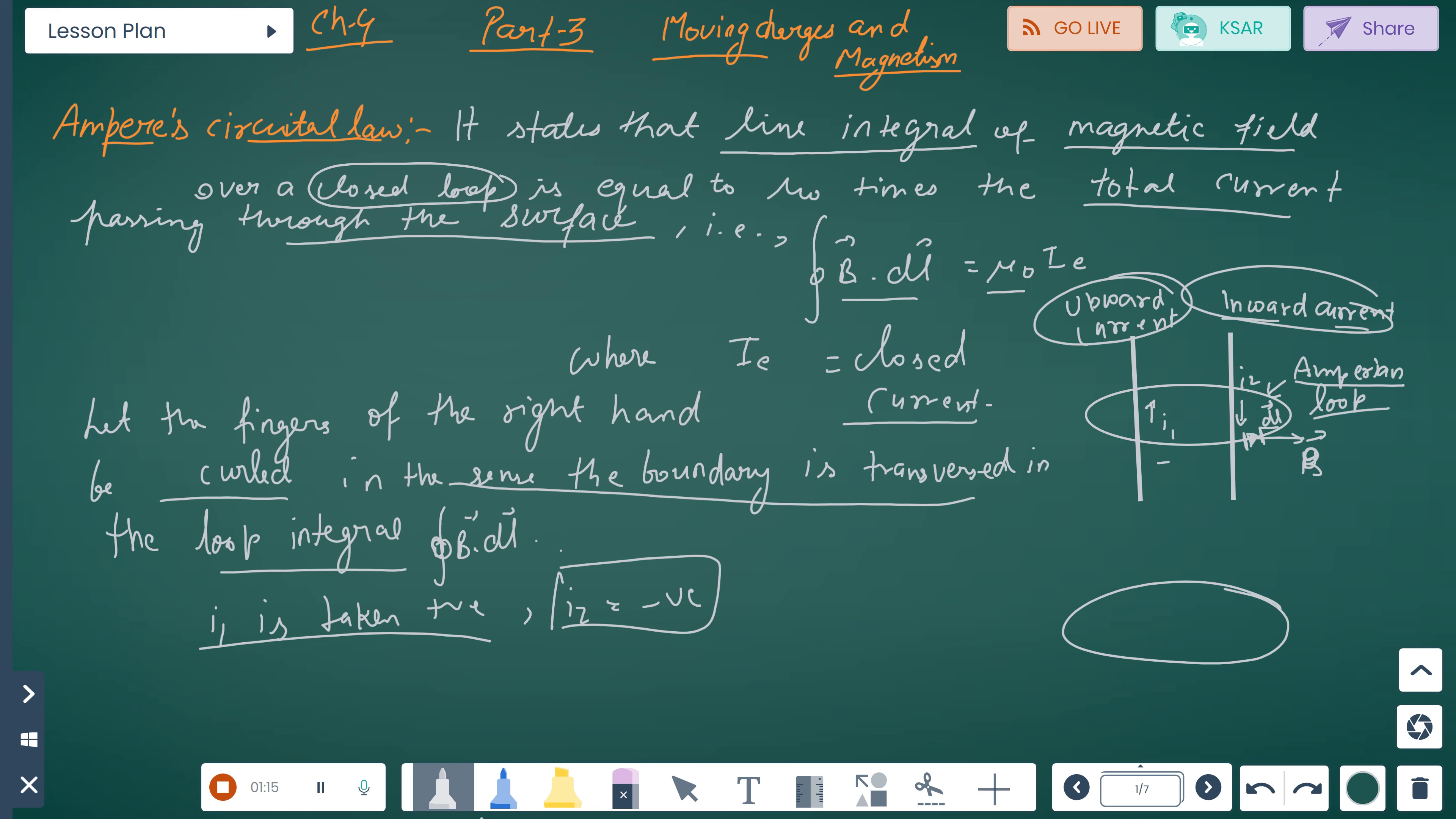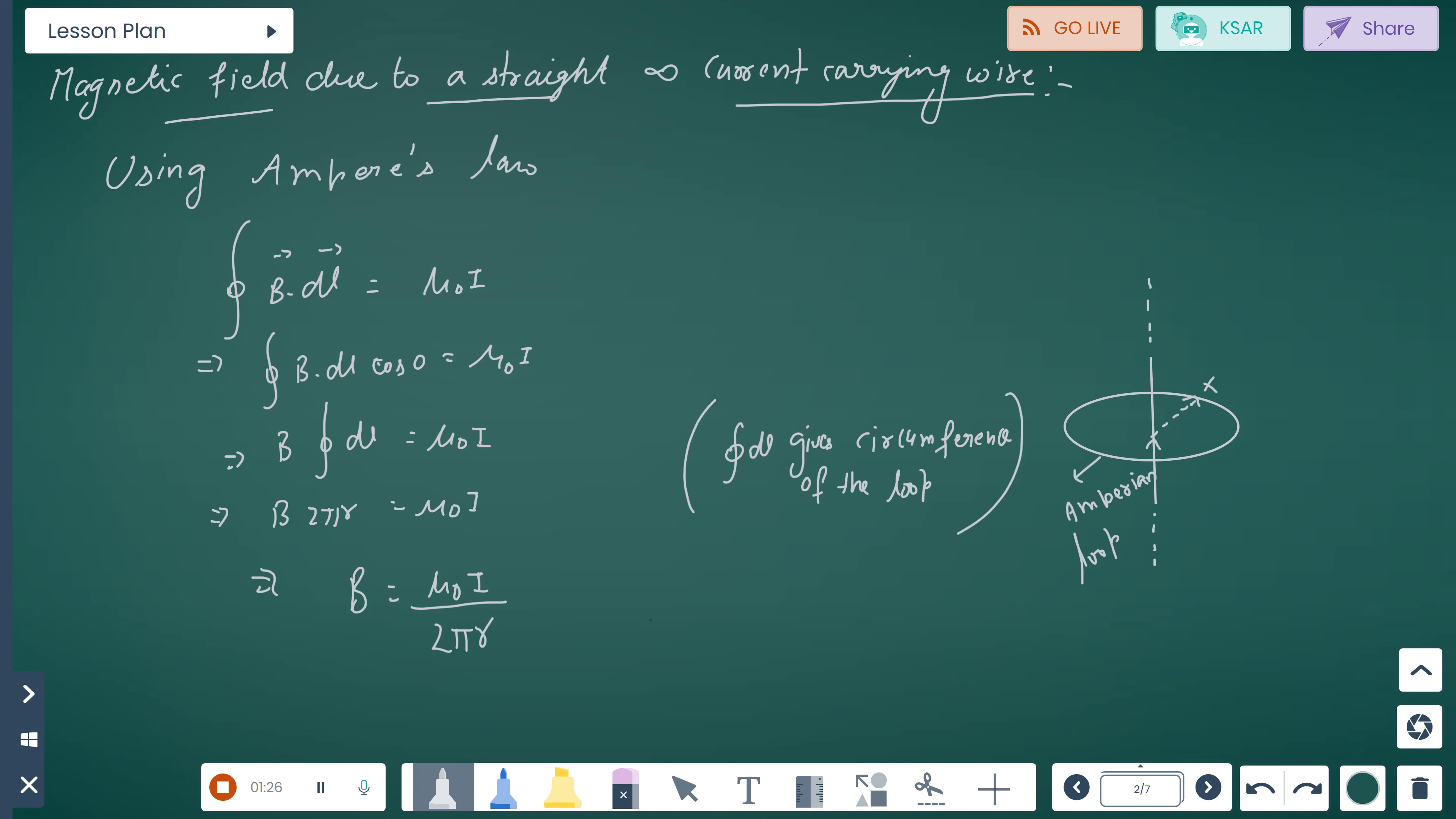And I₂ for inward current is negative. Now, magnetic field due to straight infinite current-carrying wire. For current-carrying wire, we have a loop here, an Amperian loop in a closed circle. Using Ampere's law, ∮B·dl = μ₀I. B·dl cos 0 = μ₀I. ∮dl gives the circumference of the loop. B times the integration of dl = μ₀I. B·2πr = μ₀I.